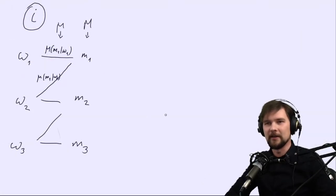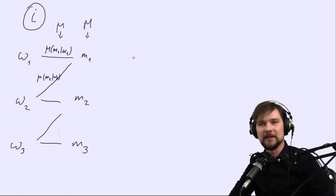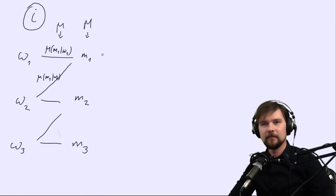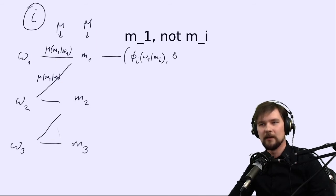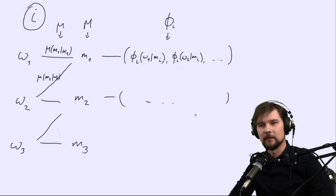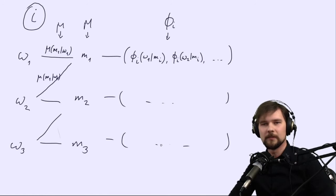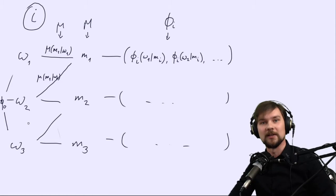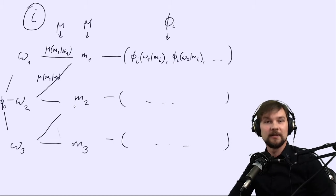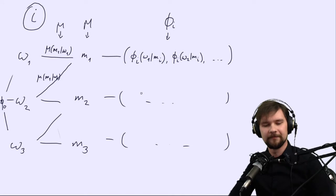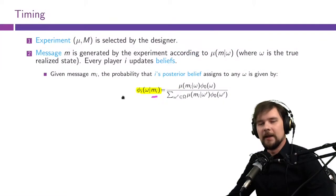Let us go back to the diagram and add posterior beliefs. From every message we get a vector of beliefs phi_i(omega_1), phi_i(omega_2), and so on — the same for every possible message. One element I missed here is the prior belief phi_0, which tells you how the states are distributed from the ex-ante perspective. We start with the prior, some state realizes, some message is sent, and this message feeds into the player's beliefs.